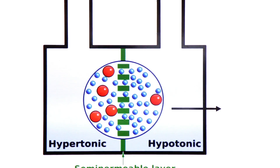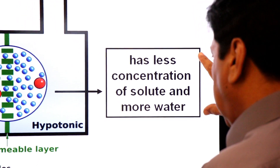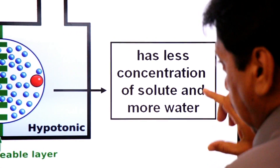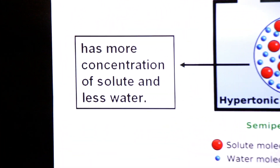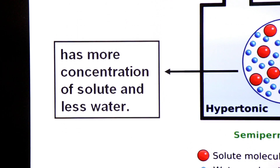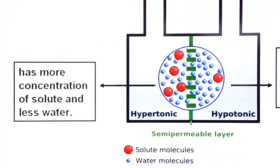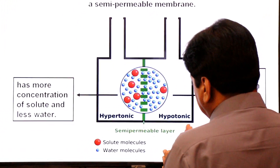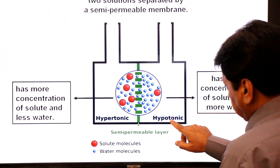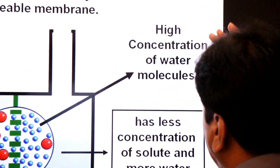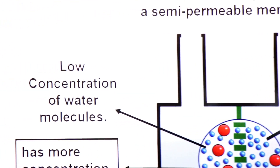A hypotonic solution has less concentration of solutes and more water molecules. A hypertonic solution has more concentration of solutes and less water. So remember: in a hypotonic solution there is a high concentration of water molecules, and in a hypertonic solution there is a low concentration of water molecules.